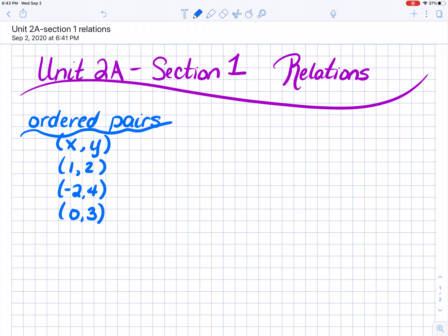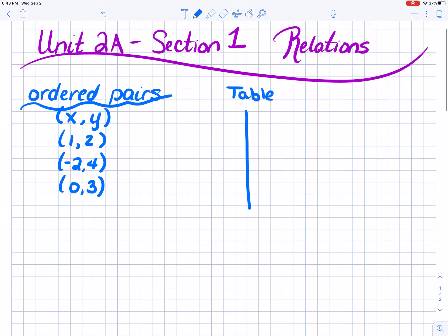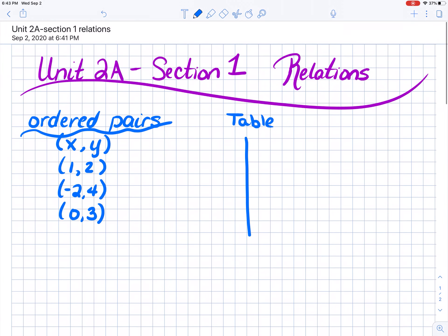We could take that same information and we could put it in a table. And some of you have probably seen this, an X, Y table. You can do it horizontally or vertically. I'm going to put an X and a Y. Now it is important that you match them with their partners. So 1 has to be next to 2 because that means X1 goes with 2. Negative 2 goes with 4, and 0 goes with 3.